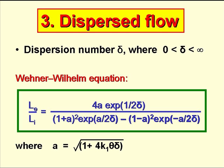In reality, of course, we don't have either of these two ideal flow regimes. We have what's called dispersed flow, and dispersed flow reactors are characterized by a dispersion number given the symbol delta. The value of delta is between zero and infinity. In a plug flow reactor, delta equals zero, and in a completely mixed reactor, delta equals infinity. In dispersed flow reactors, the value is somewhere between zero and infinity, and BOD removal is described by the Wehner-Wilhelm equation shown on the slide. The equation may look a bit complicated, but it's not really.